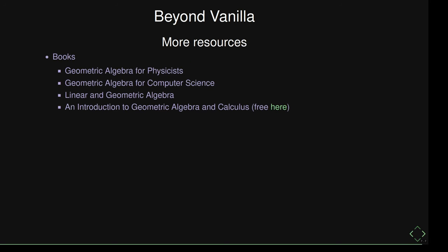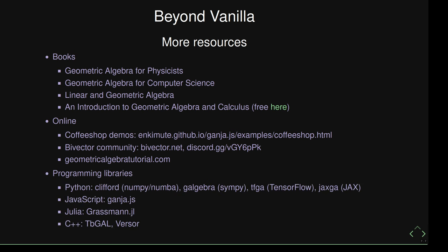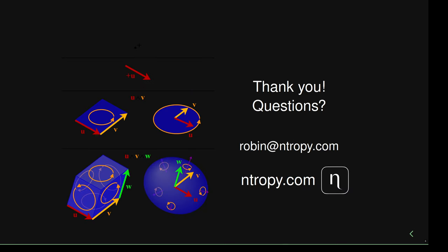Here's a list of resources to learn more about GA. A popular choice is 'Geometric Algebra for Physicists,' which covers many different topics in physics using GA. Online, there's a cool website called 'a coffee shop' — a link is provided — with lots of GA demos with code in JavaScript. For programmers wanting to experiment, there are many libraries available: the most complete one in terms of operations is probably ganja.js in JavaScript, but there are also nice Python libraries. That's it — any questions?